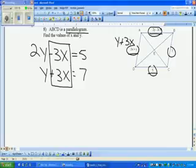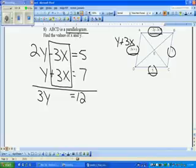So to add these two equations together, we end up with 3y equals 12. Then to solve this, you end up with y is equal to 4.